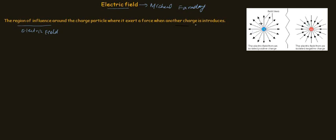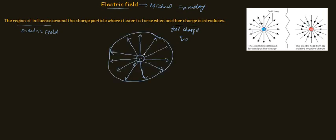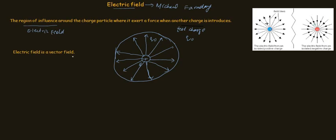We introduce another charge called a test charge, Q naught, into the source electric field. Let's say we have a positive source charge and electric field lines are leaving its surface. If we introduce the test charge Q naught inside this electric field, the field will exert a force on this charge. So we can say that the electric field is a vector field — it must have both a strength and a direction.